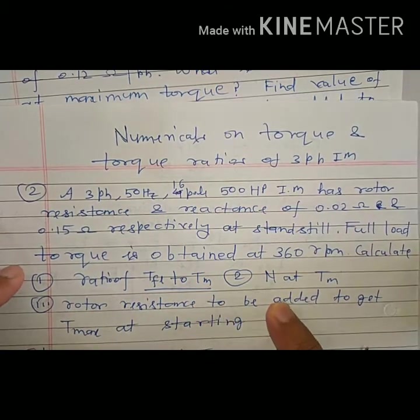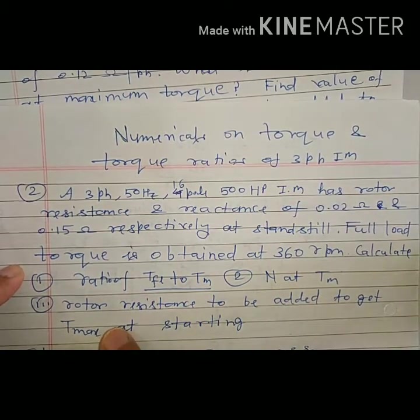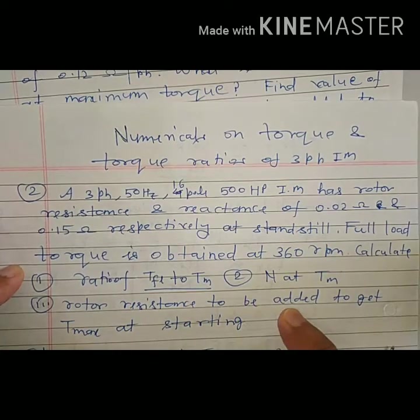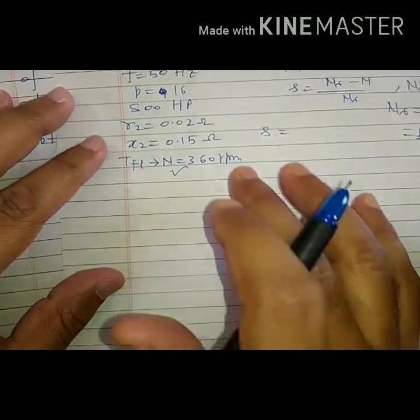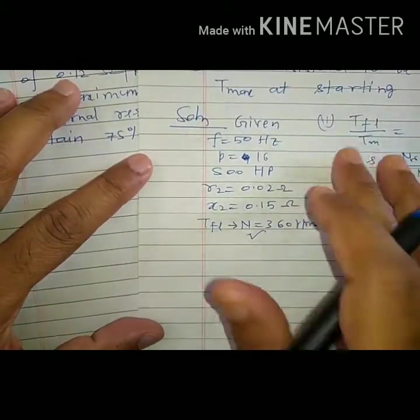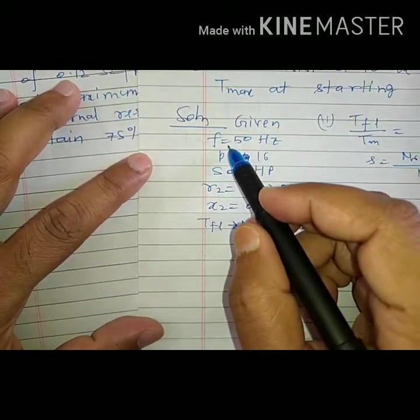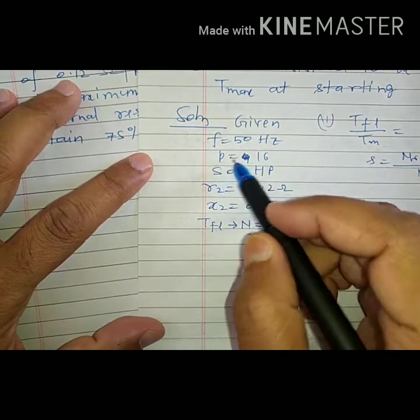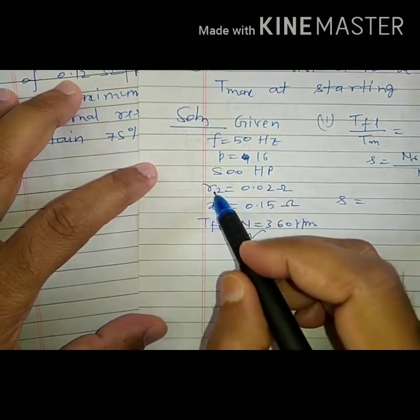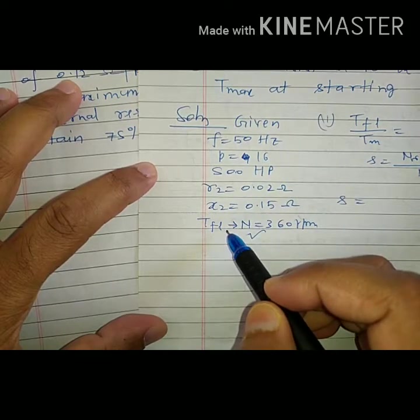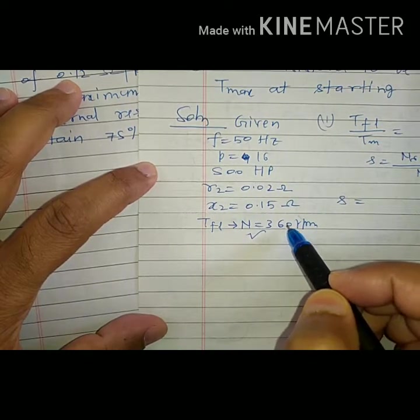Calculate ratio of full load torque to maximum torque, speed at maximum torque, and rotor resistance to be added to get maximum torque at starting. Given: frequency, number of poles, motor rating, rotor resistance, reactance, and full load torque at 360 RPM.